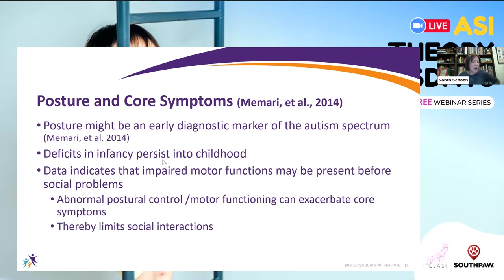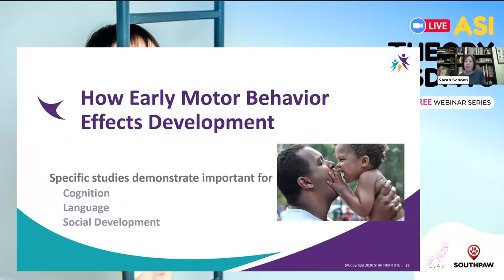Should posture be considered part of the core symptoms of autism? We're not fully ready to answer that question, but we do have some preliminary data that might support it. Some consider posture as an early diagnostic marker. We know that deficits in infancy persist into childhood, and there's data suggesting that impairment in motor functions may be present before the social interaction problems manifest. So does decreased postural control and motor function exacerbate the core symptoms or limit social interaction?